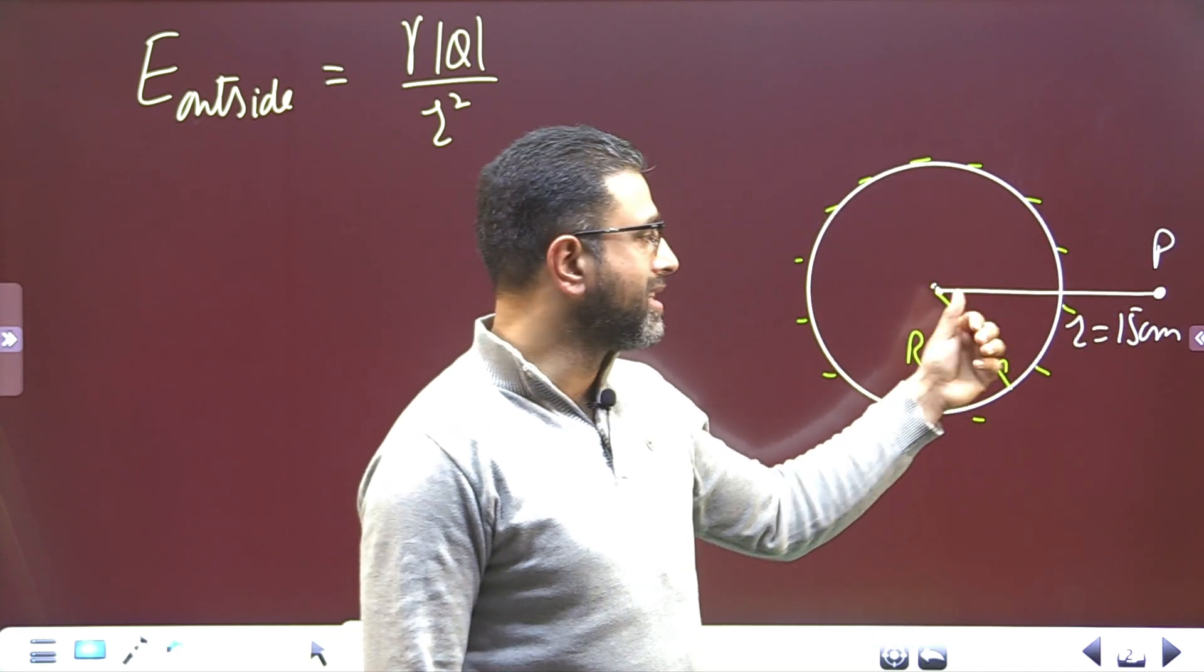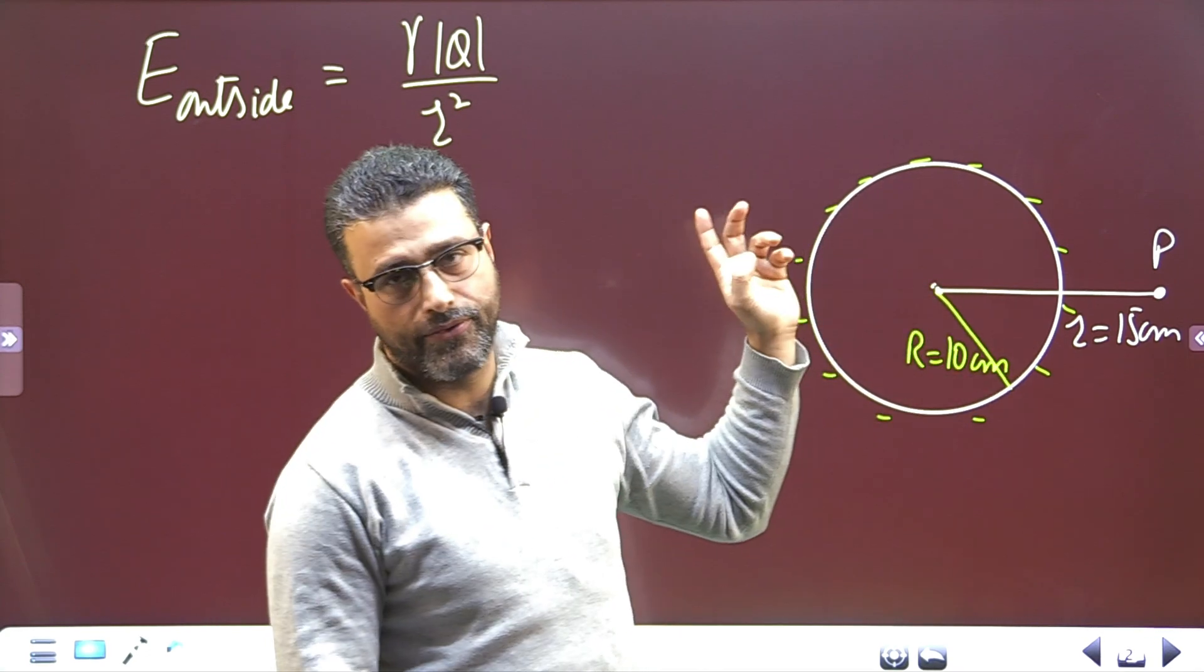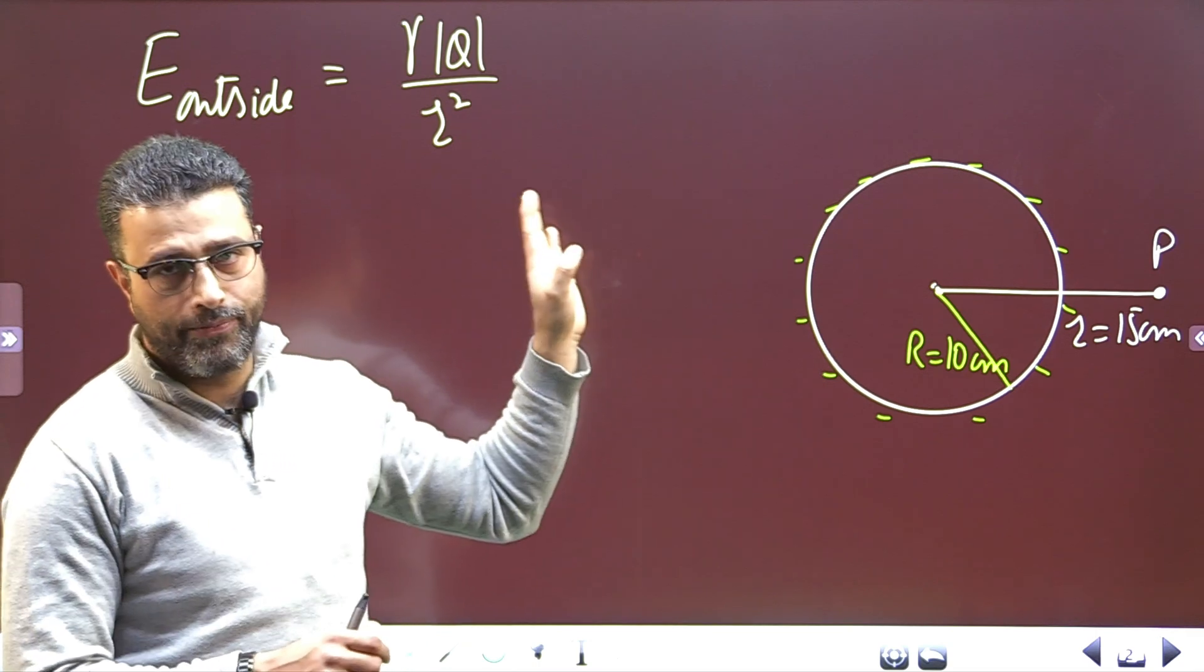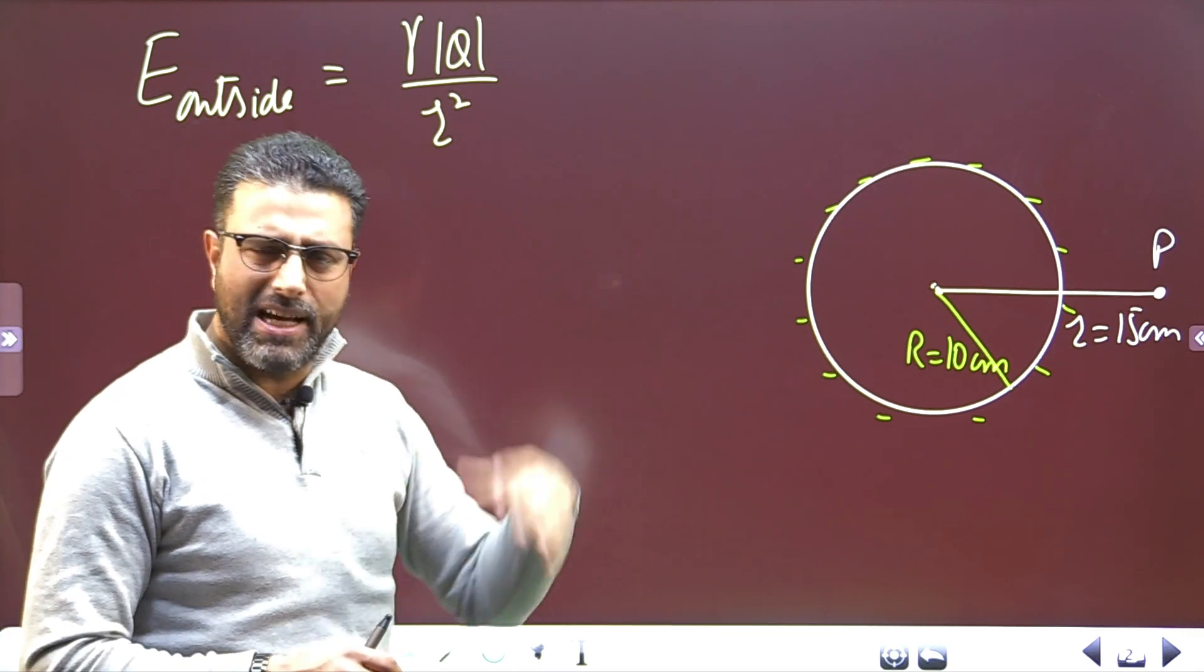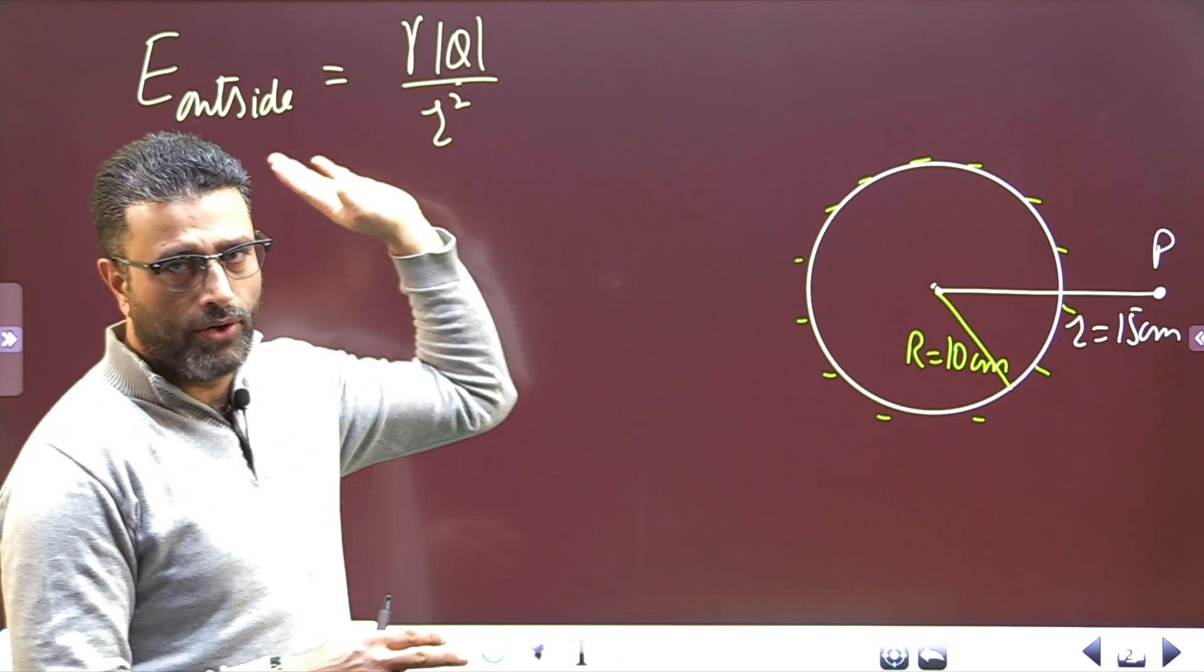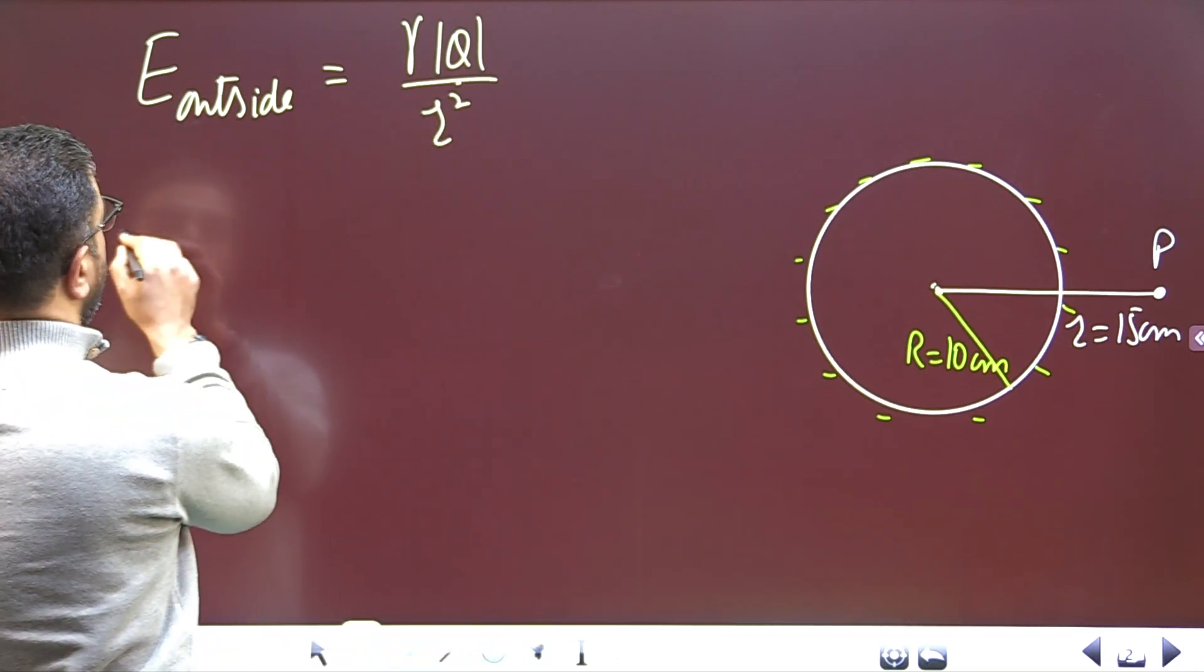That means this is a negatively charged sphere. If it were radially outward, then it would be positively charged. It is radially inward, so it is negative. That's why I have shown negative charge on the surface. So we already know that this charge Q is negative.